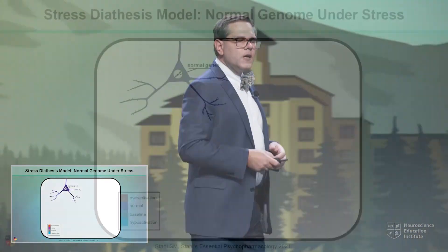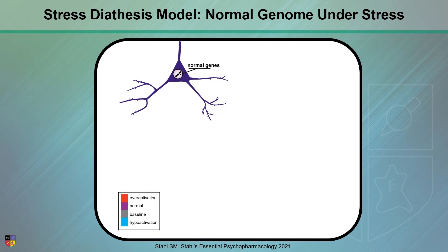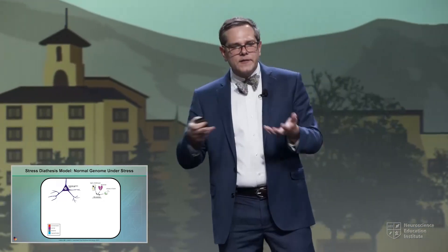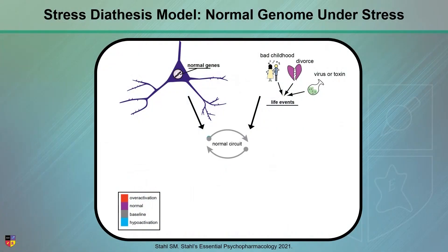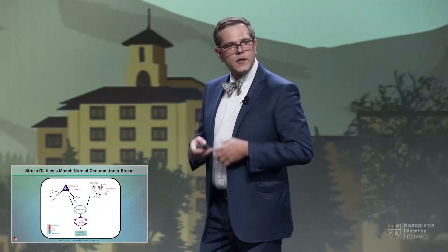Now, let's think about this in terms of a risk diathesis model. We know that under normal circumstances, when we have normal genes — and we can think about things like the serotonin transporter promoter polymorphism — and the individual is faced with any one of the various stressors we can encounter over the course of our lives, we essentially have a normal circuit, and normal activation, and a normal phenotype.